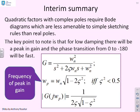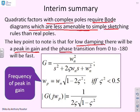Here's an interim summary. Quadratic factors with complex poles require Bode diagrams which are less amenable to simple sketching rules than real poles. While there's a pattern, the sketching rules are actually quite complex. The key point is that for low damping, there will be a peak in the gain and the phase transition from 0 to minus 180 degrees will be fast.